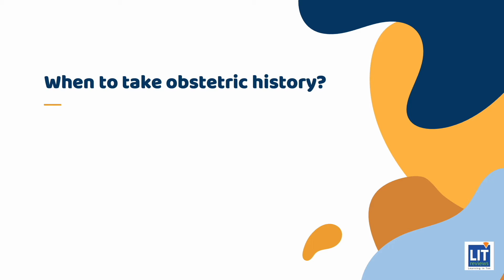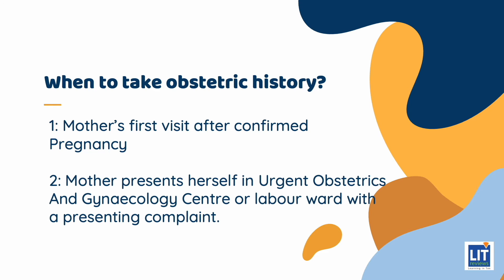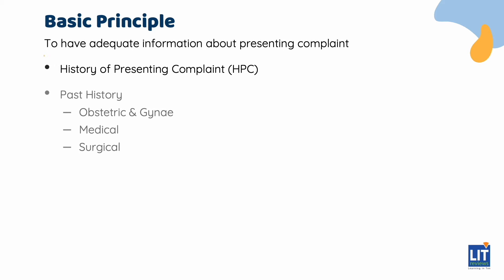There are mainly two types of scenarios when an obstetric history would be taken. One, during the mother's booking visit, where this is the mother's first visit to the OB/GYN department after finding out that she is pregnant. The other scenario is when the mother presents herself in the Urgent Obstetrics and Gynecology Center, UOGC, or labor ward with a presenting complaint. In every OB/GYN history, we need to have adequate information about the history of presenting complaint, HPC, and the past obstetric and gynecological history is crucial.